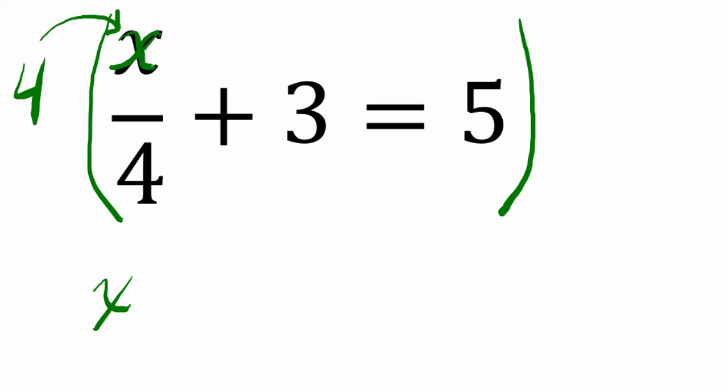So that's our first distribution. In general, we can get rid of our denominators by multiplying by that number, or at least a multiple of that number. In this case, like 4, 8, 12, and so on.